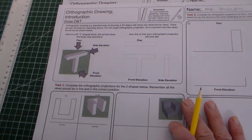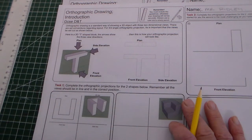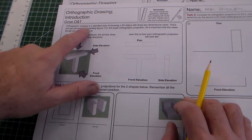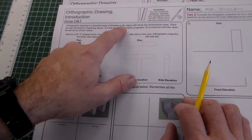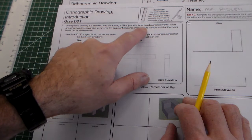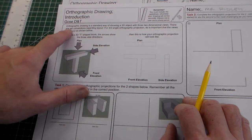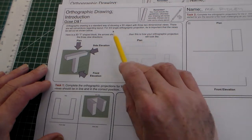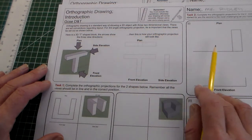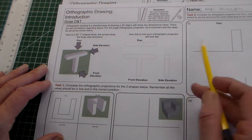Hello, with this sheet we're going to look at orthographic drawing. Orthographic drawing is a standard way of showing a 3D object with three two-dimensional views. There are set conventions regarding layout. For third angle orthographic projection, it is important that the views are set out as below.